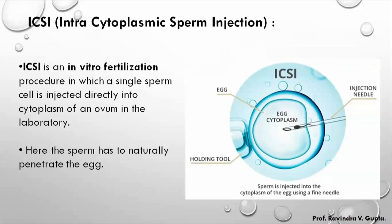The next part is ICSI — Intra-Cytoplasmic Sperm Injection. In this technique, a single sperm is injected directly into the cytoplasm of the egg. You can see in this diagram: there is a pipette that is used as an egg-holding tool, and another needle for sperm injection.